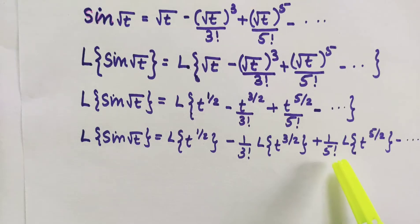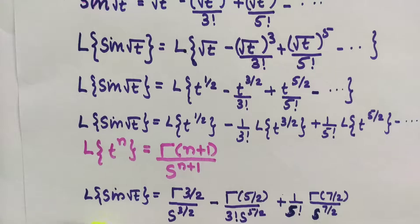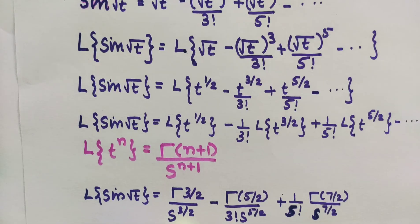The Laplace transform of t^n is Γ(n+1) / s^(n+1). Applying this, L{t^(1/2)} = Γ(3/2) / s^(3/2), and L{t^(3/2)} = Γ(5/2) / s^(5/2).